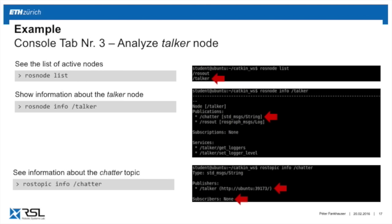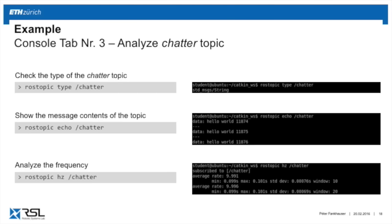To know more about the /chatter topic, type rostopic info /chatter. You'll see there is one publisher — the talker node — and no subscriber yet. You can look more closely at the chatter topic by typing rostopic type /chatter, which tells you this topic is of type std_msgs/String. You can view the contents by typing rostopic echo /chatter, and you should see the message with increasing numbers. You can also check the publish frequency with rostopic hz /chatter.